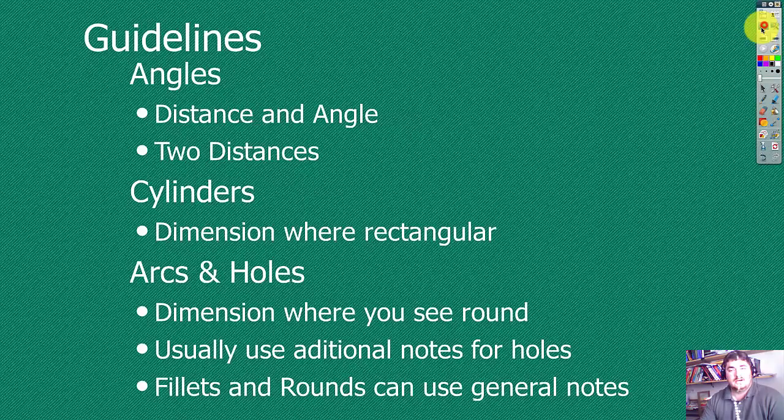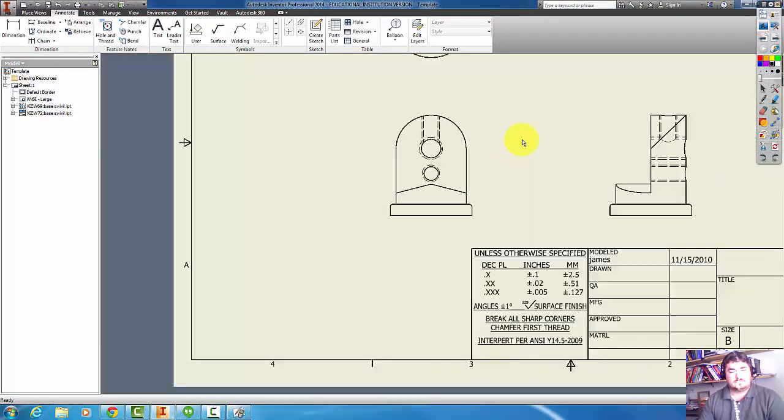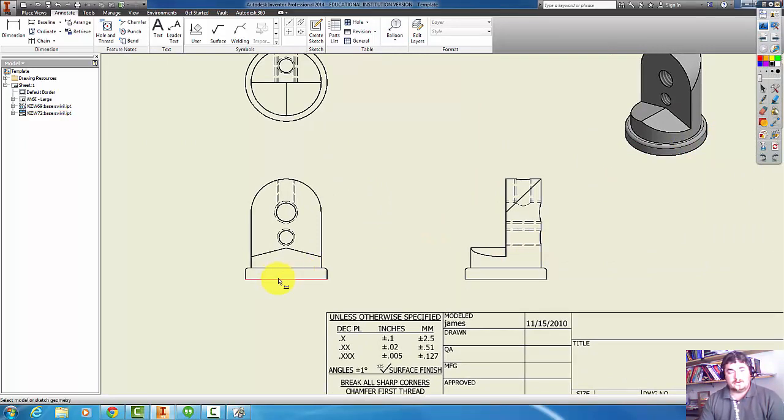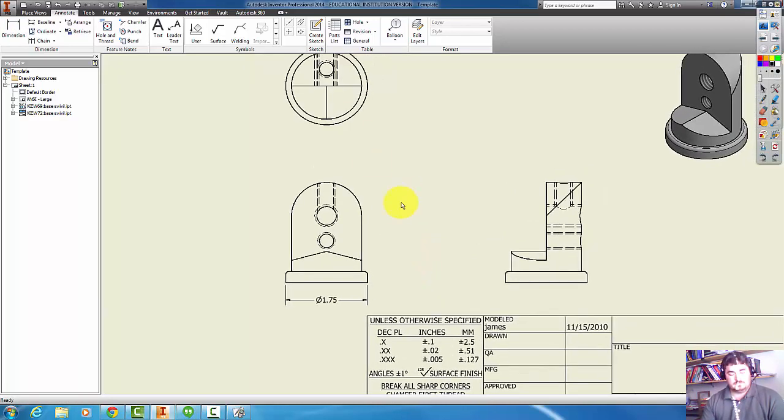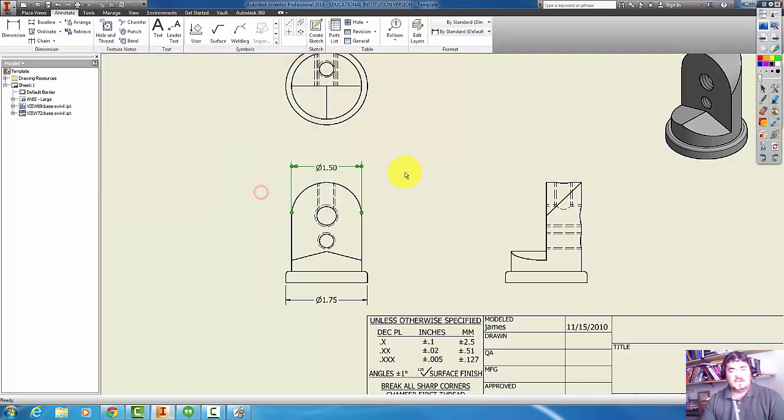With cylinders, we usually want to dimension them where they look rectangular. So this bottom piece here is a cylindrical piece. If I just dimension that coming down and give the diameter, that's the preferred way to do that. Same thing with this upper piece, maybe pull it across there. That didn't give me the diameter symbol because I didn't pick a circular edge, but if I just come back into my notes and add the diameter symbol, now we know that that's a diameter there.